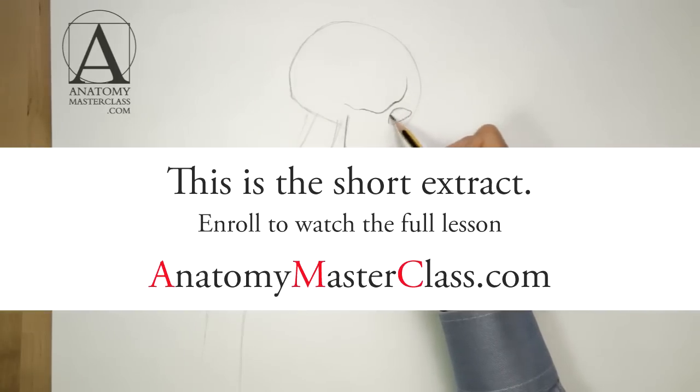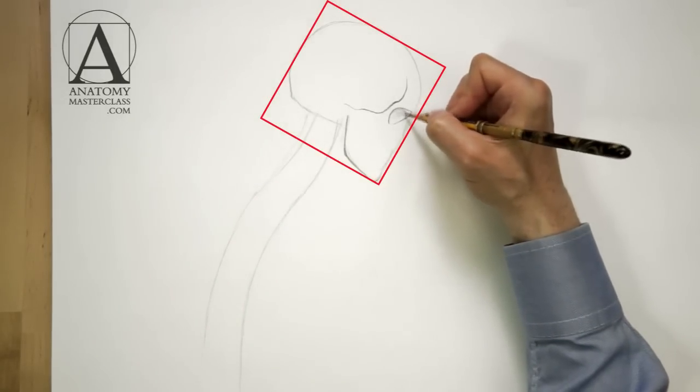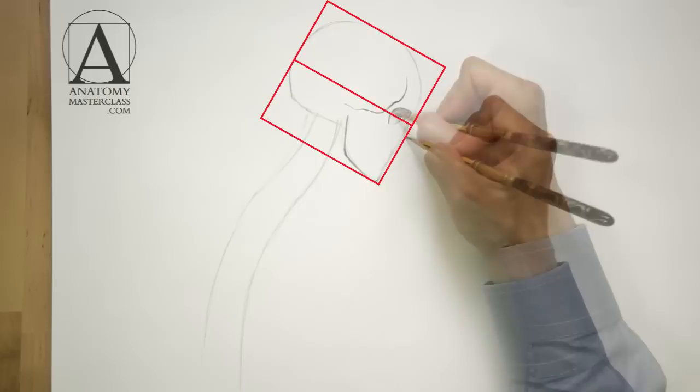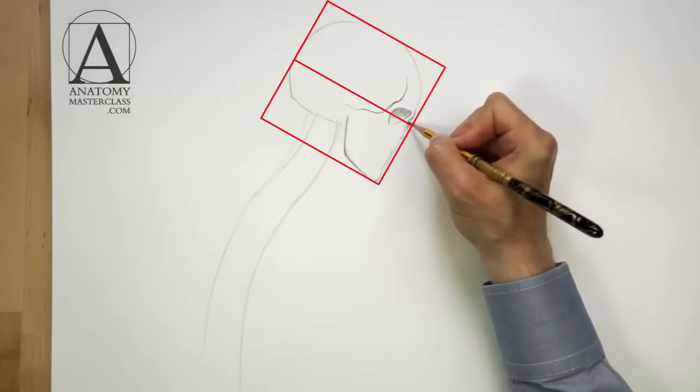We see the model's head in profile. From this point of view, the head can be inscribed by a square. By dividing the height of the skull in half, we can locate the position of the eye socket.